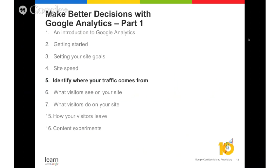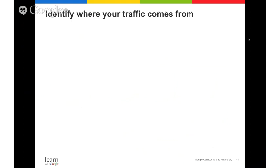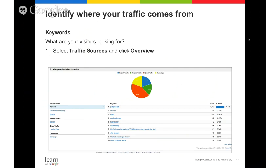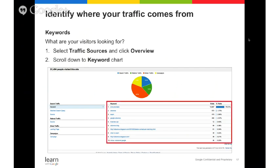Now let's identify where your traffic is actually coming from. You can find keywords in the Traffic Sources section by clicking Overview. By looking at the keywords report, you'll have a better understanding of what your users are looking for and which keywords are driving the most organic traffic. You can also see other ways users are coming to your site — for example, direct traffic from those typing in your URL, search engines, and referral sites.